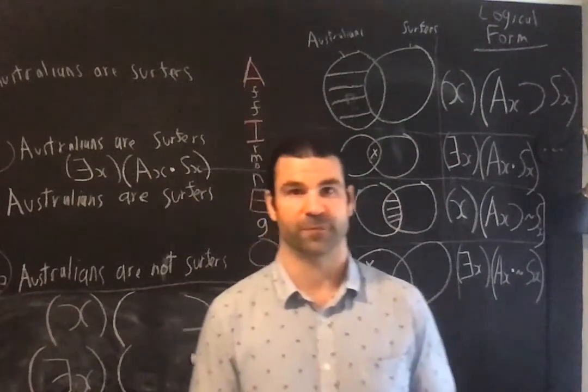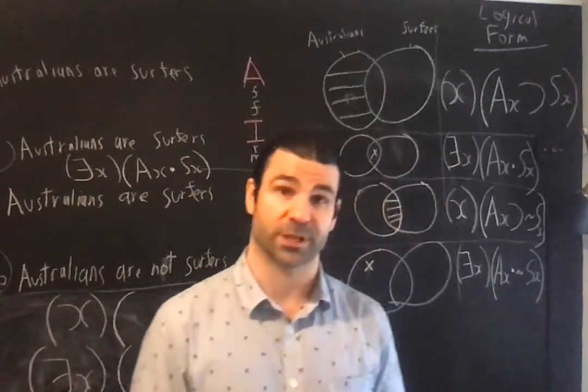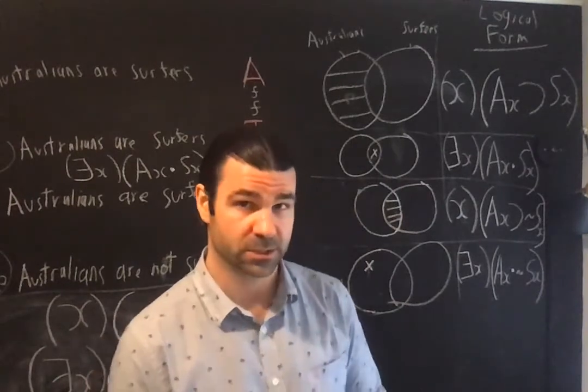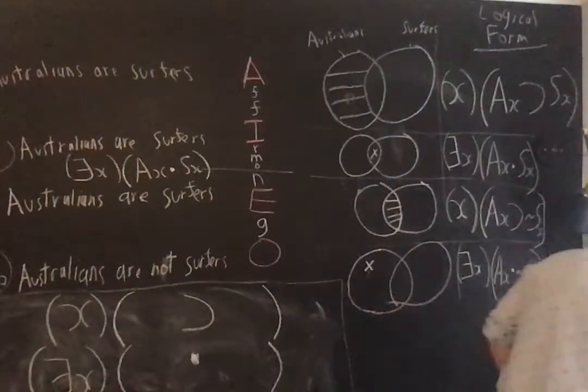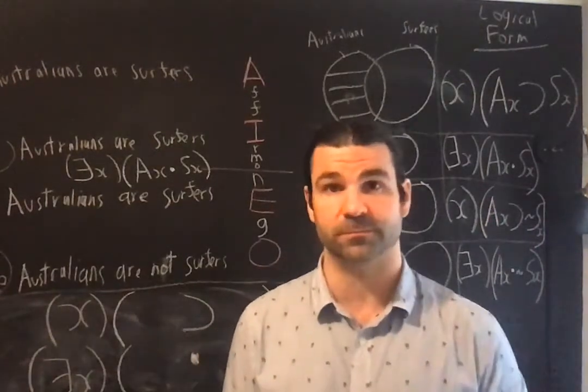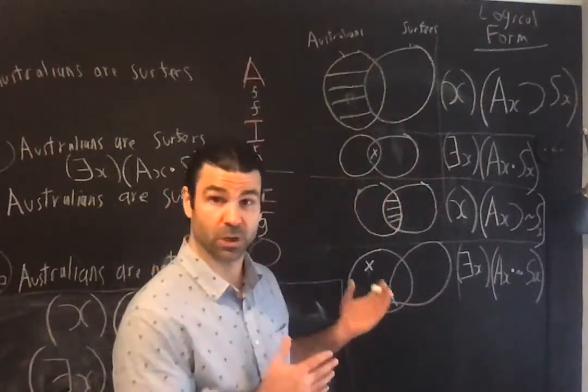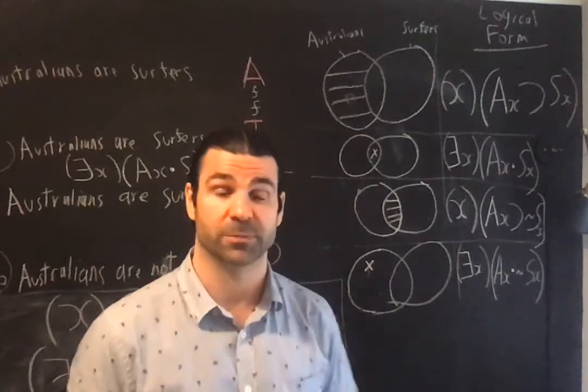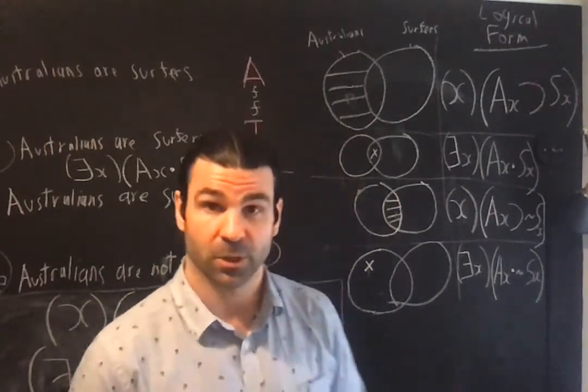Unit 12, part 5. We're now up to section 4 of Clank's text, starting on page 233, on symbolizing categorical propositions. This is where we get to the actual logical form of our four different types of categoricals.